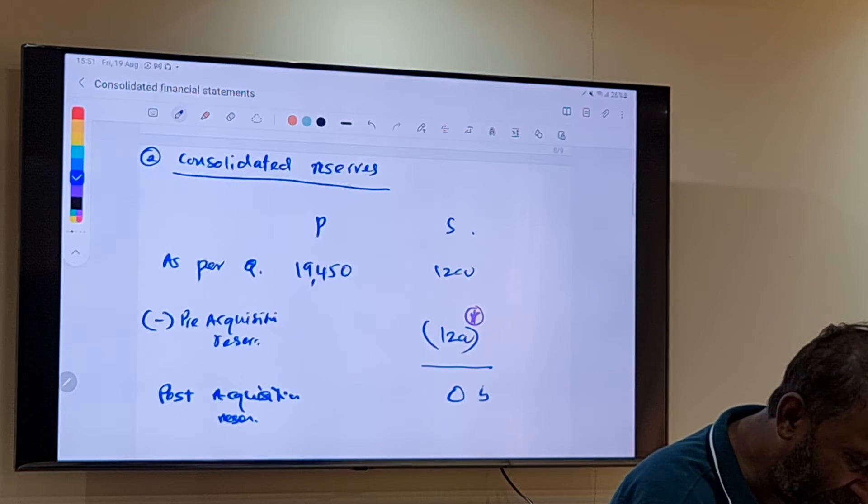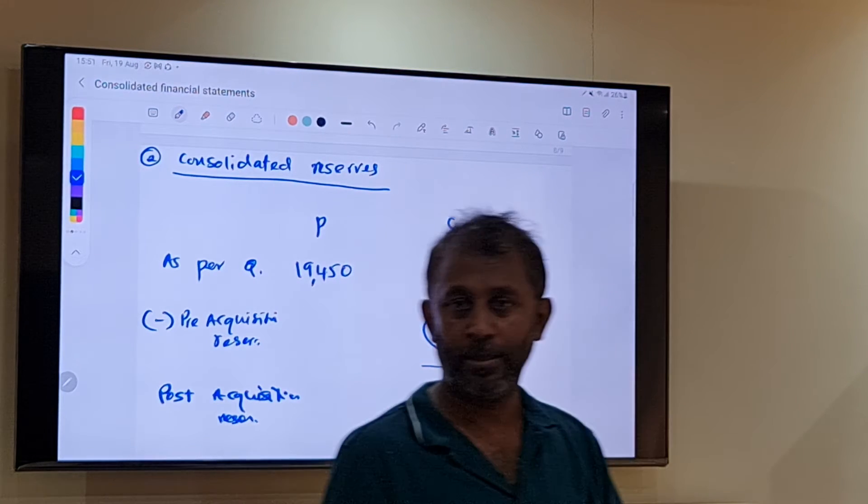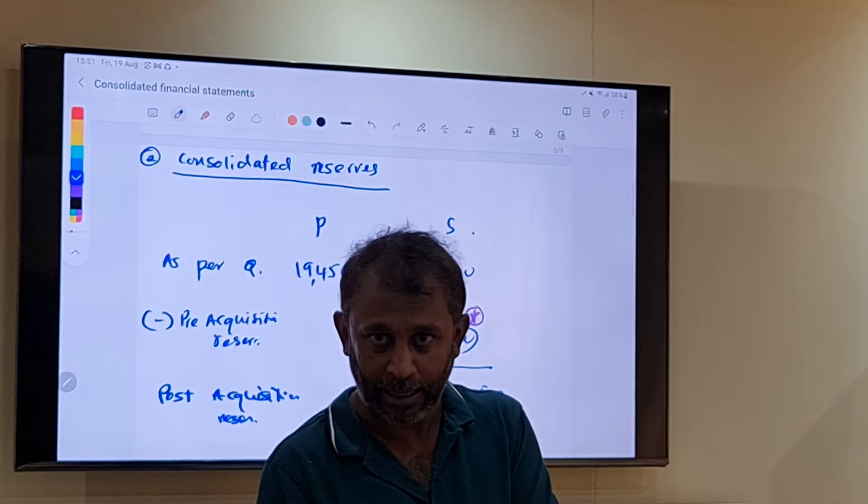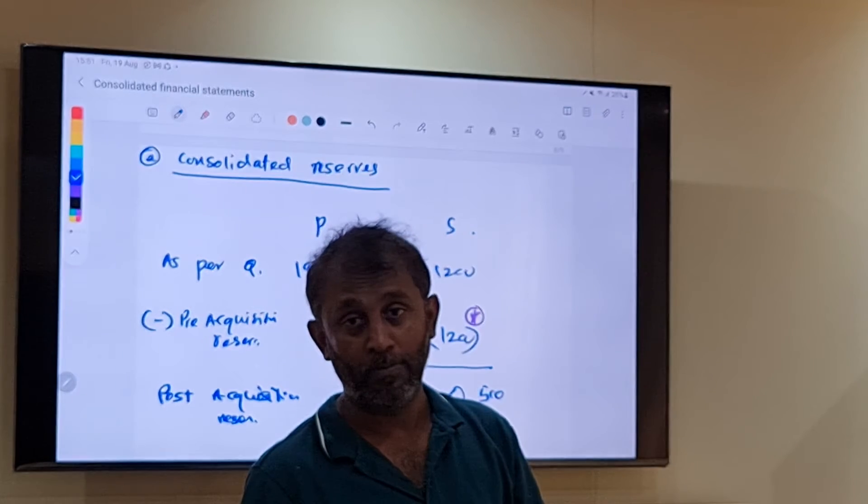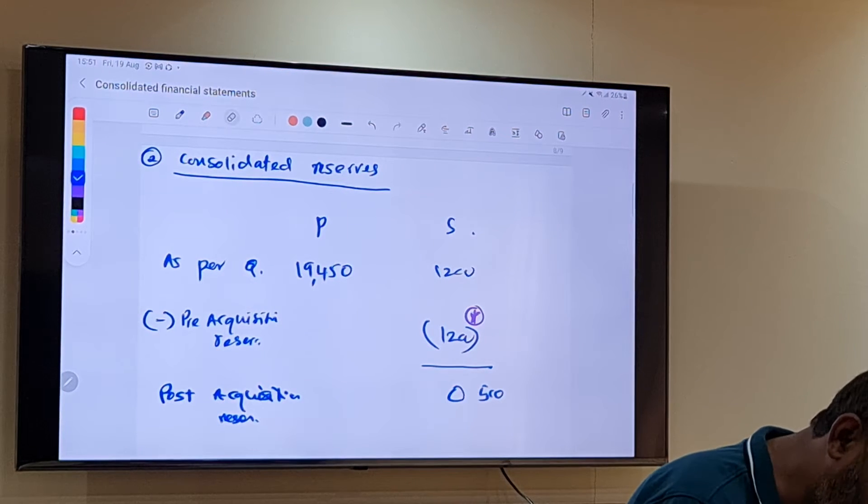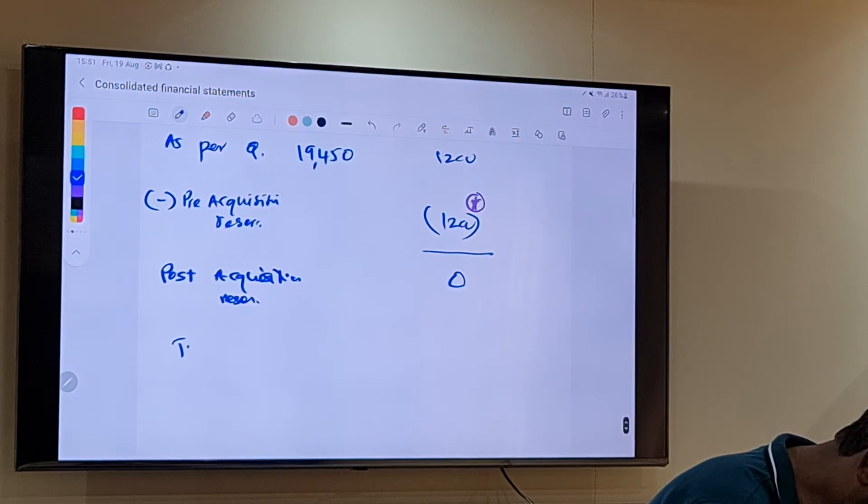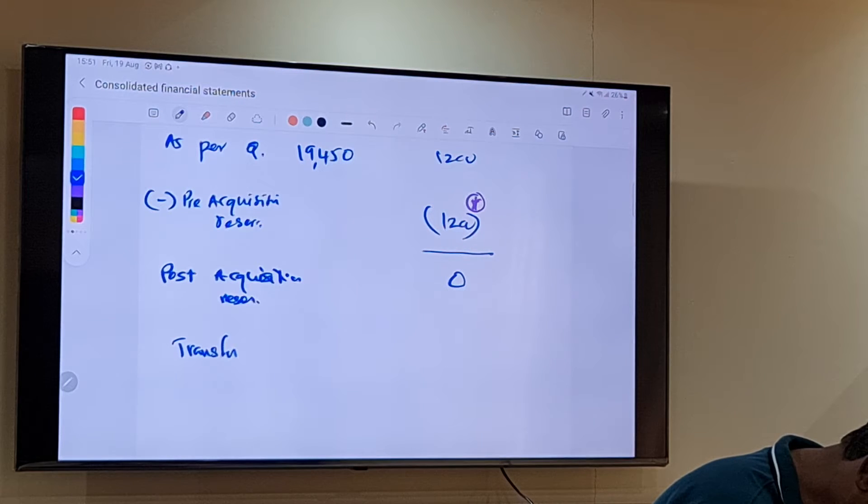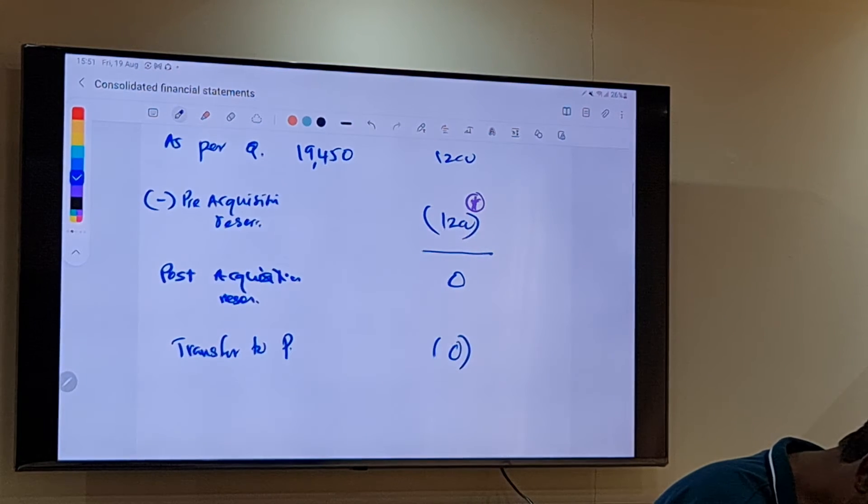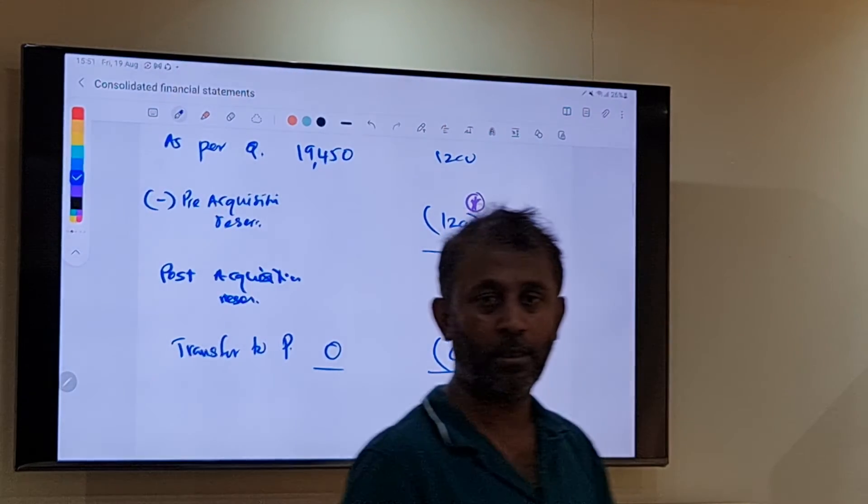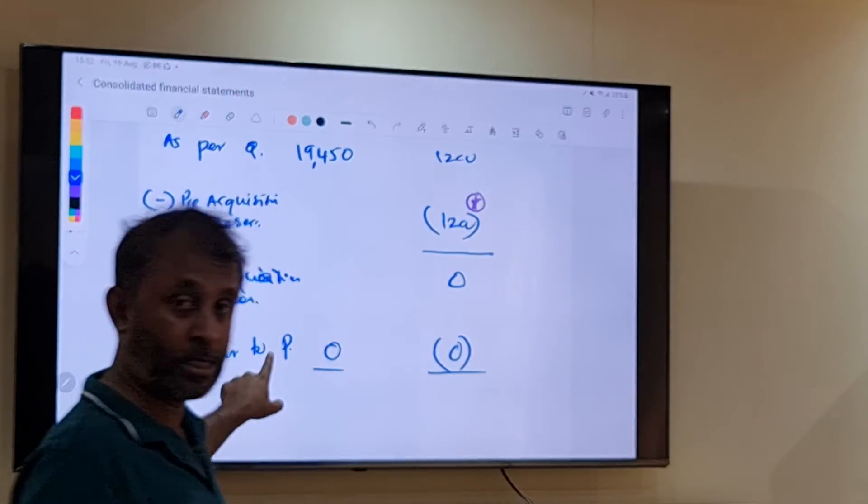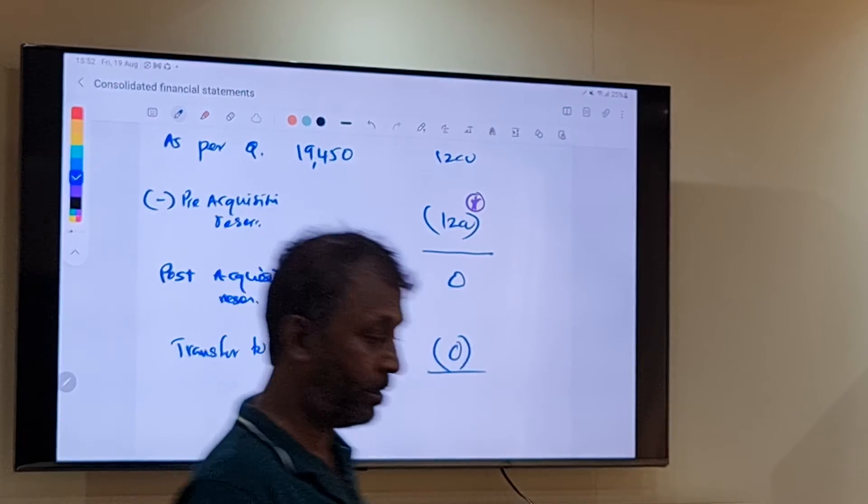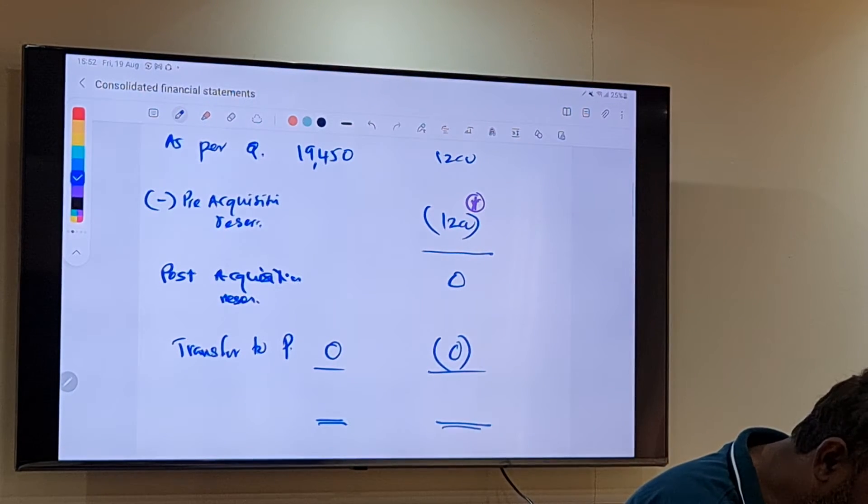Suppose for example you have 500 here, that means the remaining retained earnings is owned by whom? It belongs to the parent. So what you need to do now, you should transfer to parent. The entire amount, whatever the amount, you will transfer. And then we get 19,450. So this is the group retained earnings.